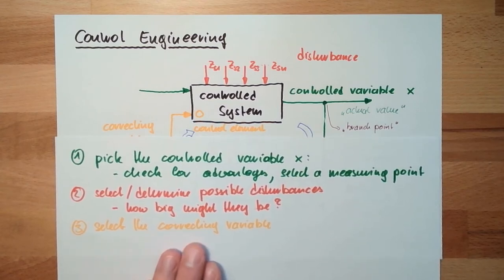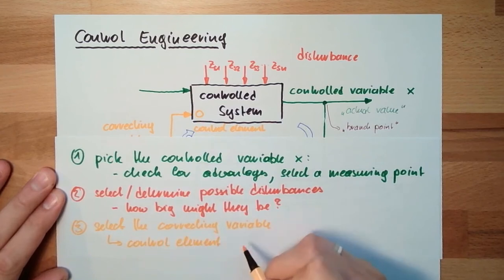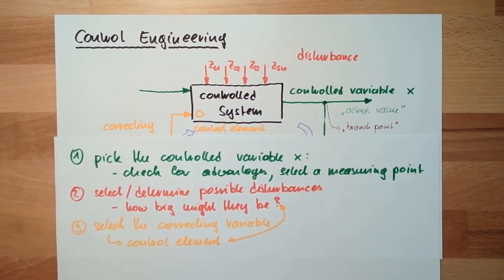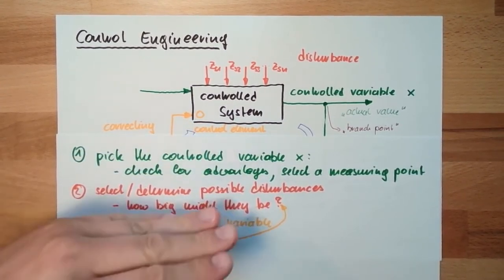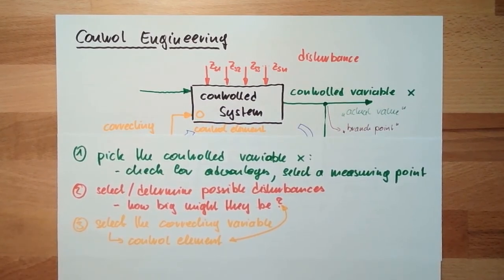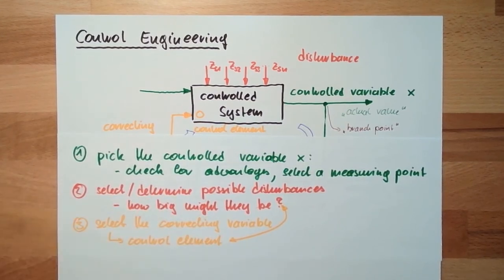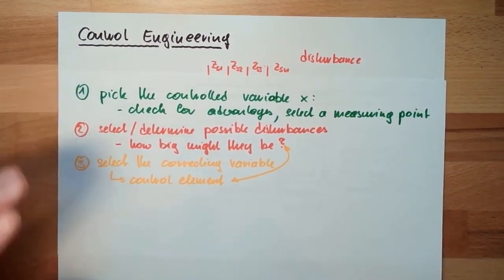Once I have selected the correcting variable, I can select the control element. I have to select it in a way that the control element is strong enough to correct the biggest possible disturbance. So from the correcting variable I know which type of control element I need, and from the disturbance I know how big and powerful this control element needs to be.